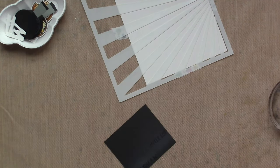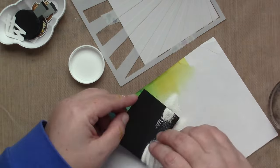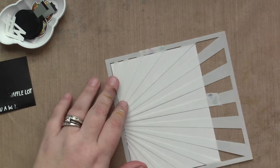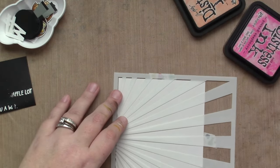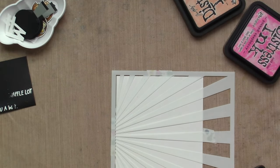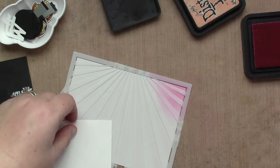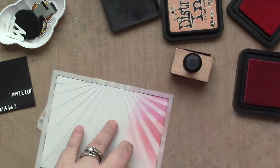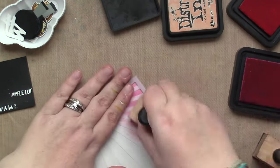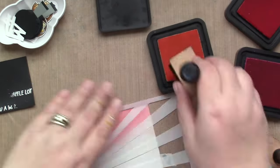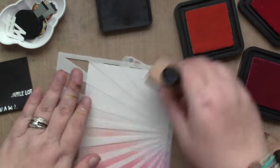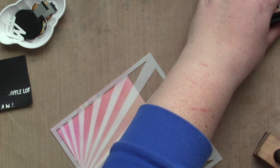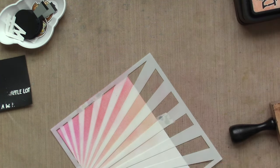Next I am heat embossing the sentiment. It's not a complete sentiment because I'm not using that word waffle - I'm going to be using die cut letters from Henry's ABCs. I just wanted the 'lot' heat embossed and the 'I like you a' or 'I love you a.' Then I'm going to trim those out with my trimmer.